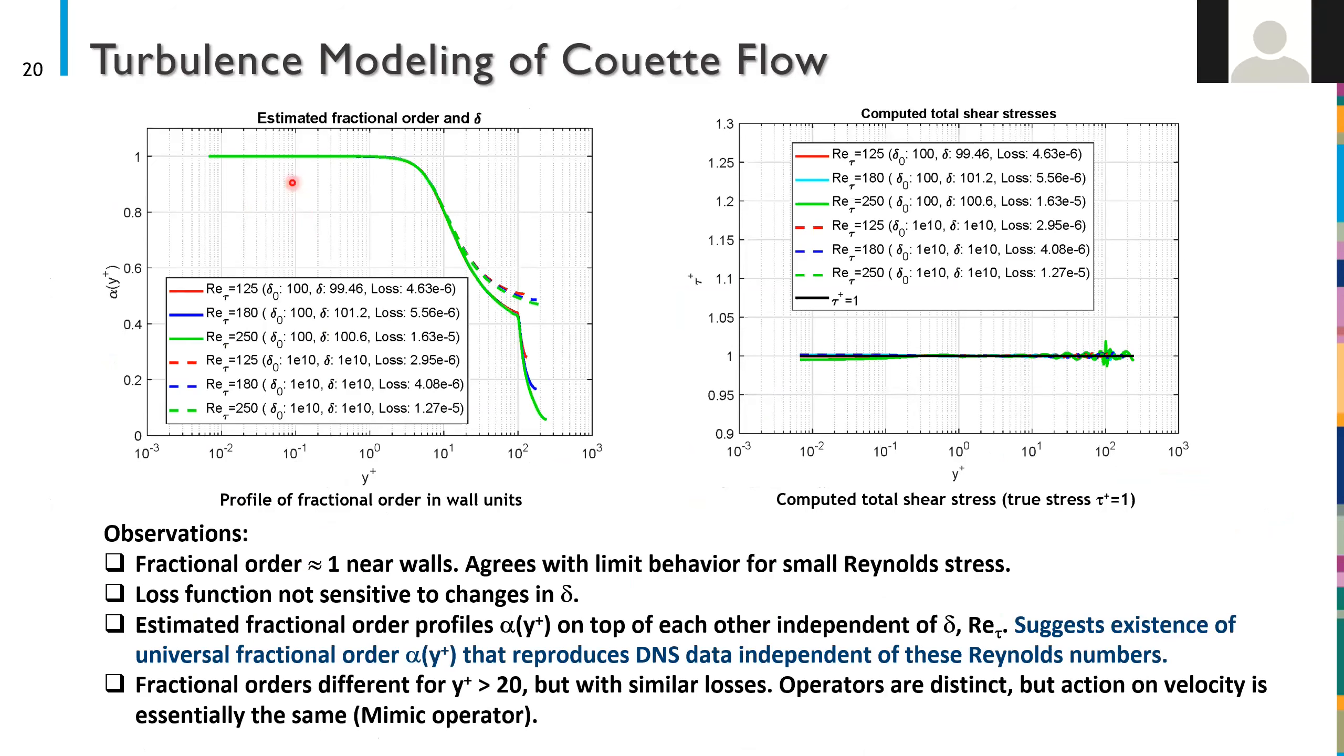In the left figure we can see the fractional order profile for different Reynolds numbers and different initial guesses for δ. And by the way this is all somebody else's DNS data that we trained on. We observed that the converged value for δ is close to its initial guess which means that the value of the loss function is not sensitive to changes in the interaction radius. We also notice that independent of the Reynolds number and δ the estimated fractional order profiles are nearly on top of each other here as a function of the wall unit. This implies that for some fixed horizon δ there's a universal fractional order α in this range that reproduces the DNS data for different Reynolds numbers. This is pretty synergistic with some of the results that George and Mohsen presented yesterday.